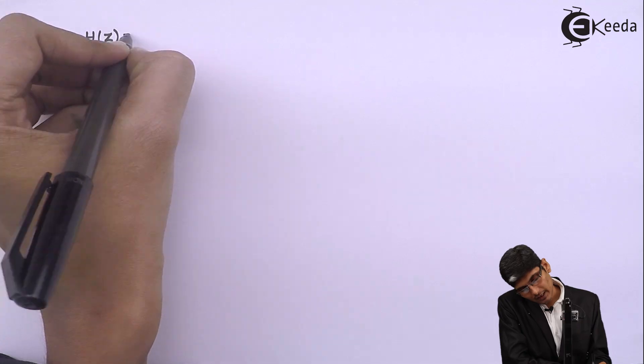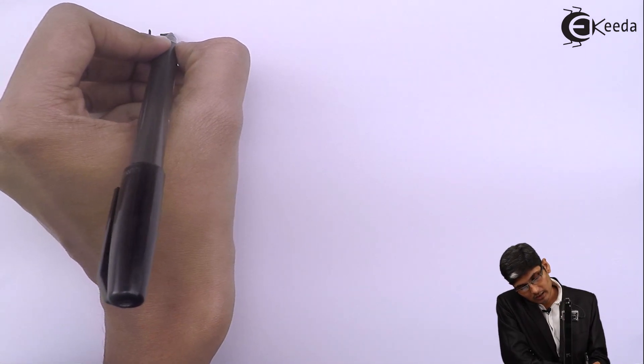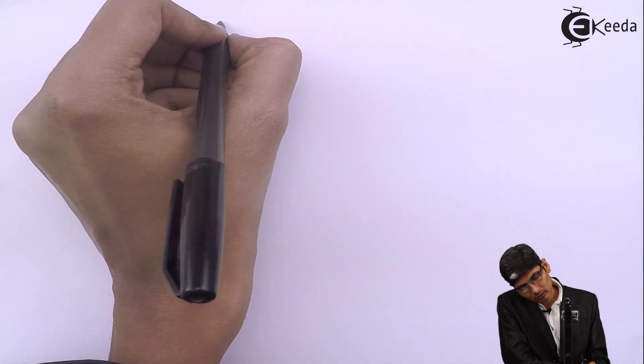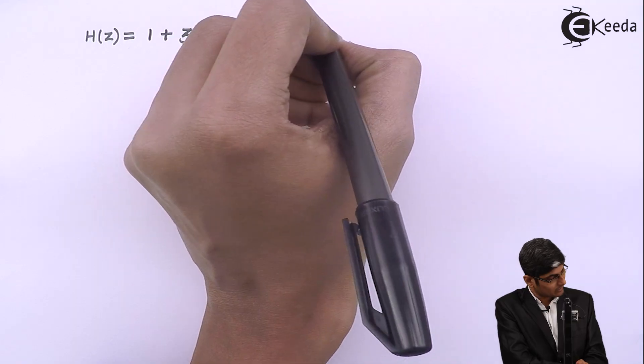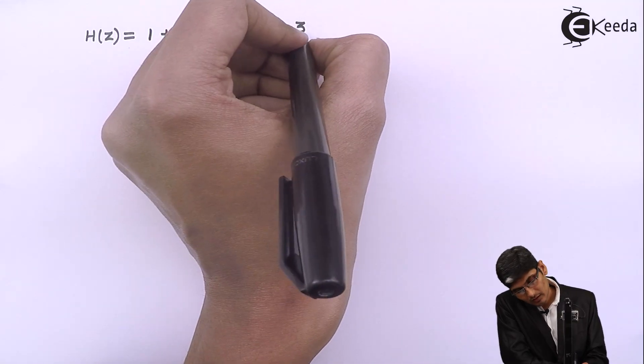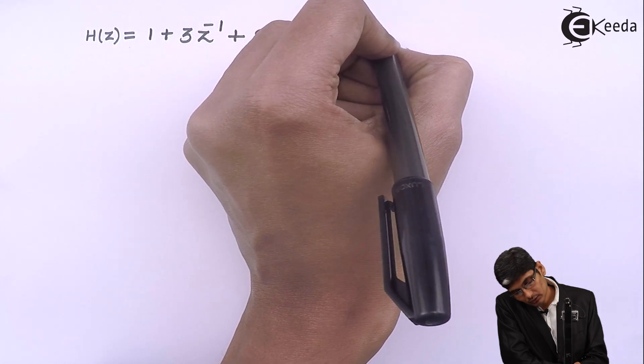The problem for today is given as H of Z, that is a transfer function given as 1 plus 3Z inverse plus 2Z raised to minus 3 minus 4Z raised to minus 4.